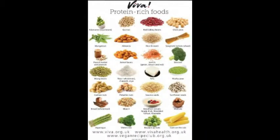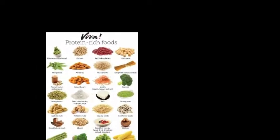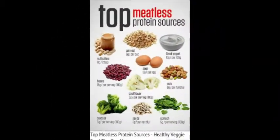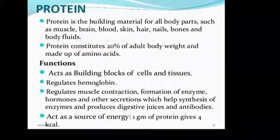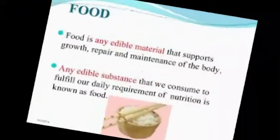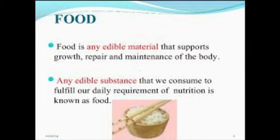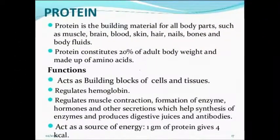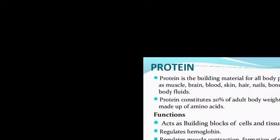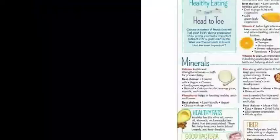Protein repairs all the muscles in our body that are not functioning properly. Protein builds the body and muscles of children effectively. The main sources of protein include milk, egg, pulses, and whole wheat products.